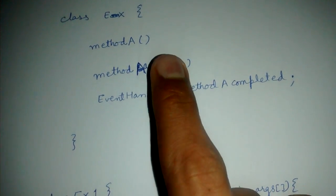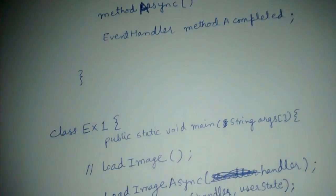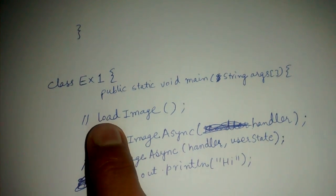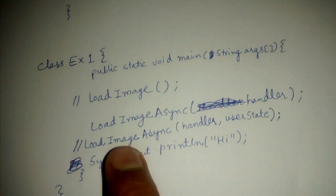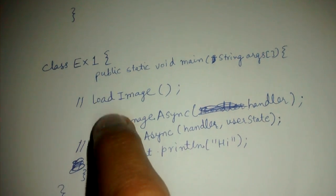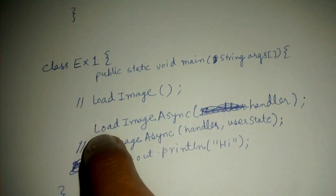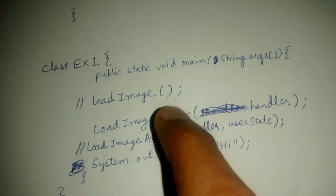Let's see this example one. In this we call load image, which has two versions. Load image is commented out, but load image async is what I am actually calling.